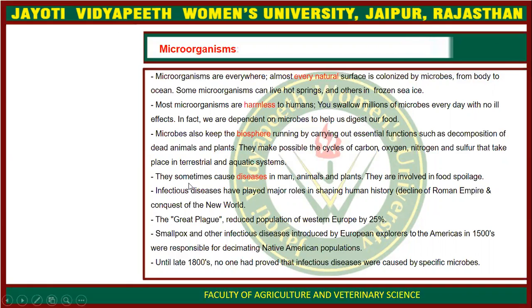Some microorganisms can cause disease in man, animals, and plants, so they are also harmful. Some of them cause infectious diseases. For example, the Great Black Death reduced the population of Europe by about 25%. Similarly, smallpox is also a disease. At this time, coronavirus — which is a pandemic disease — is also caused by a virus.